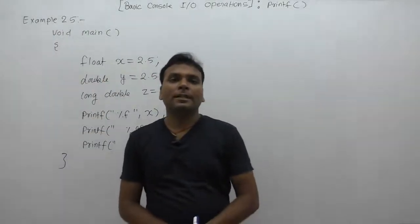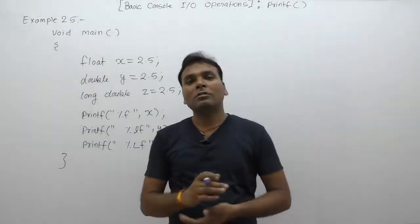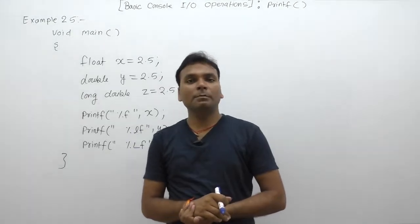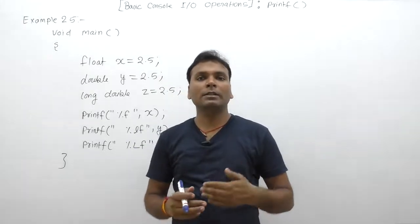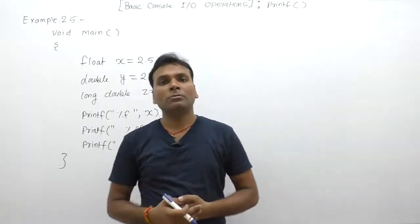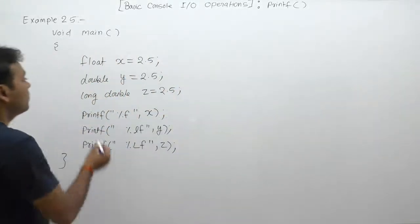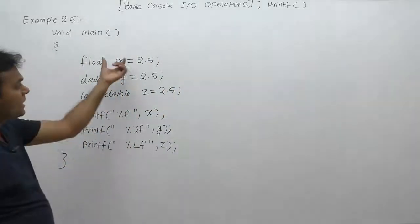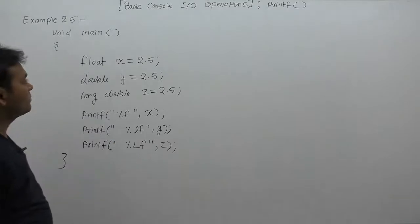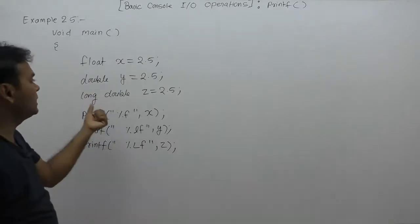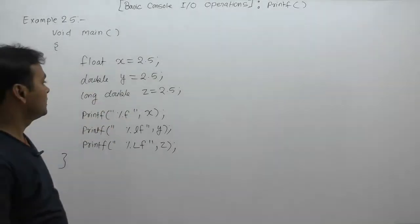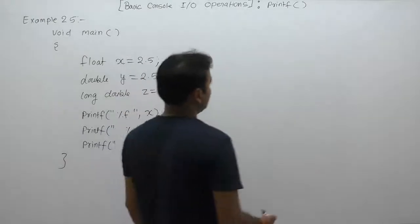Next, how to display double or long double values using printf function. Till now we were displaying only float type values, but how to display double or long double? Here we are declaring three different types of variables: float variable x, double variable y, and long double variable z.